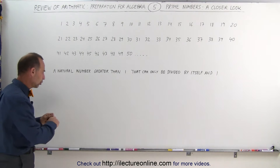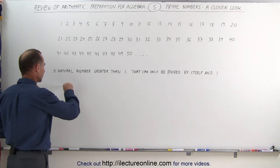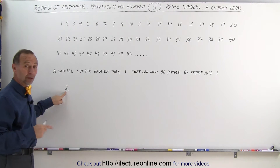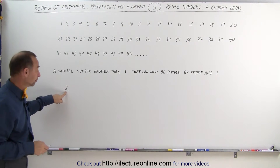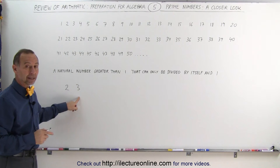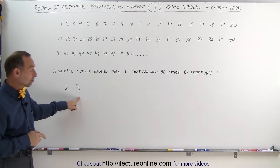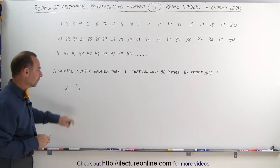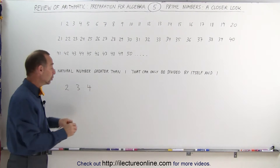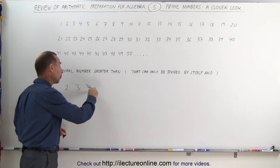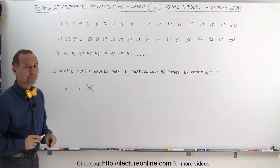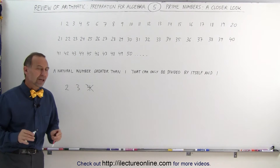For example, the number 2 can only be divided by 1 and itself. The number 3 can only be divided by 1 and itself, but the number 4 can also be divided by 2, so the number 4 is not a prime number. That's the definition.